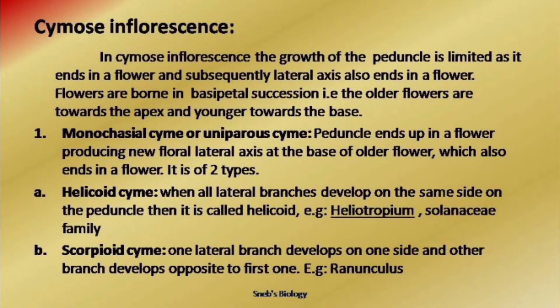In cymose inflorescence, the main axis always terminates into a flower, and every branch also terminates into a flower. We divide it into various types on the basis of how many branches are produced each time.